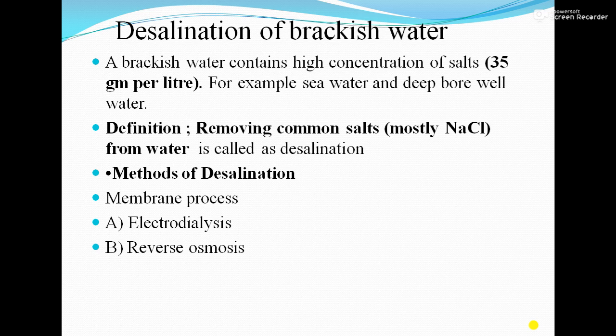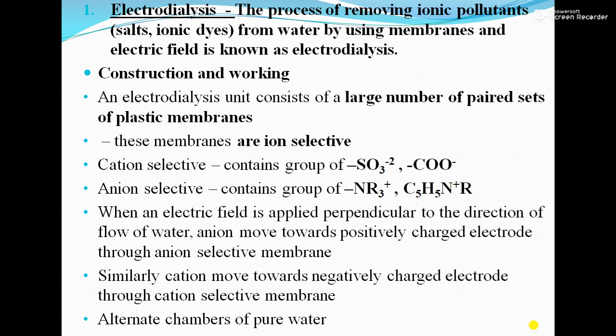Electrodialysis: the word 'electro' indicates there is a cathode, an anode, an electrolyte, and an electric current. Electrodialysis is the process of removing ionic pollutants such as salts and dyes from water by using membranes and an electric field. An electrodialysis unit consists of a large number of paired sets of plastic membranes. These membranes are ion-selective — a cation-selective membrane has functional groups SO₃²⁻ or COO⁻, while an anion-selective membrane has groups NR₃⁺ or C₅H₅N⁺R.